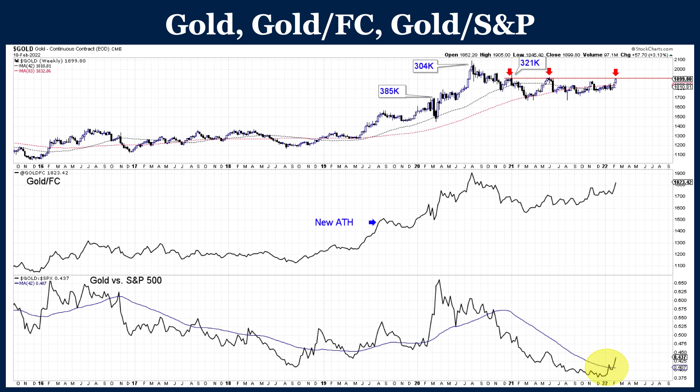Gold against foreign currencies is within 4% of the all-time high and has broken out to a new 52-week high. However, it's really meaningful when it makes a new all-time high, because if it doesn't, that's not as powerful a leading indicator. When it does make a new all-time high, it could lead gold by anywhere from a couple of months to as long as a year. For the sake of this video, I'm just pointing out it's an important leading indicator — it's acting well, and it's leading.